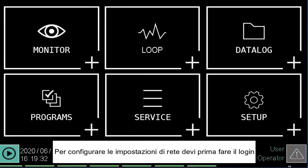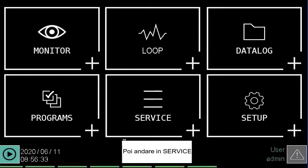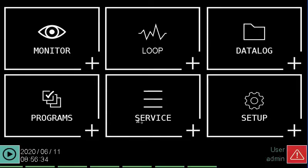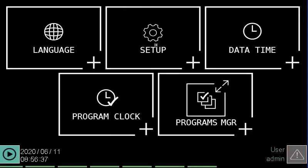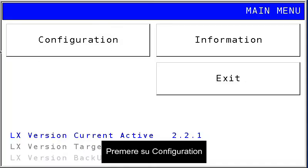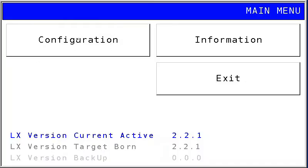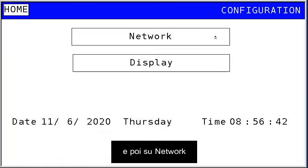To configure the network settings, you need first to log in, then go to Service, then on Setup, click on Configuration, and then on Network.